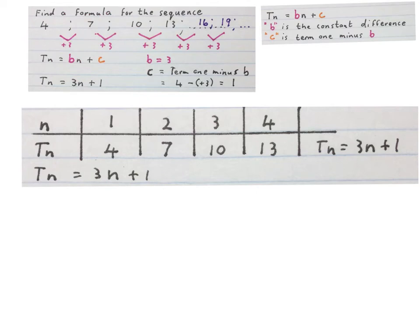Now to check if this formula works, I've put it into a table. So 4 is the first term, 7 is the second term, 10 is the third term, and the fourth term is 13.